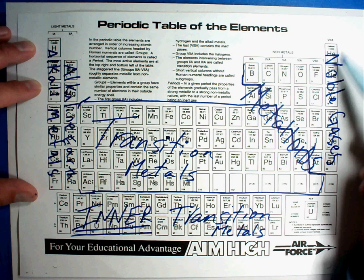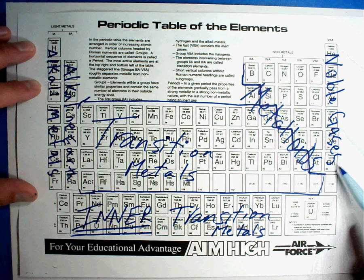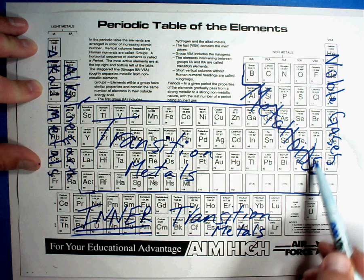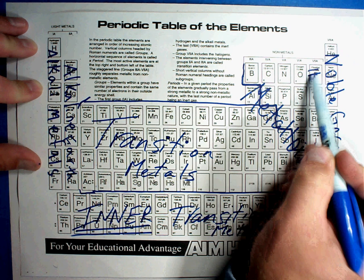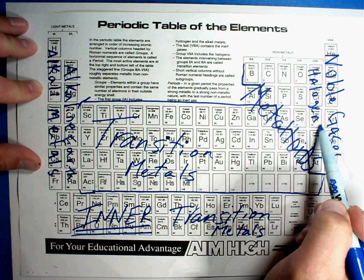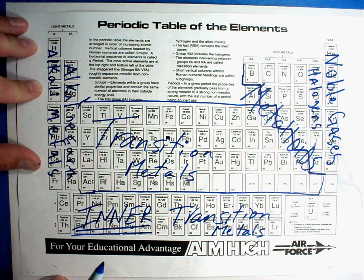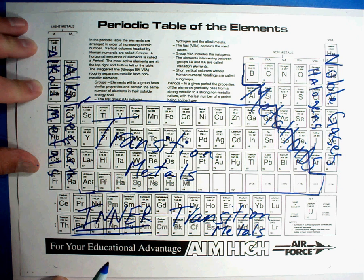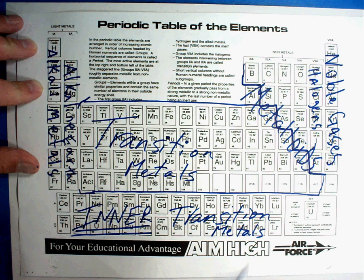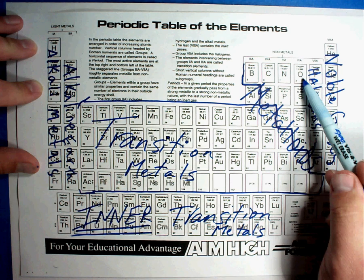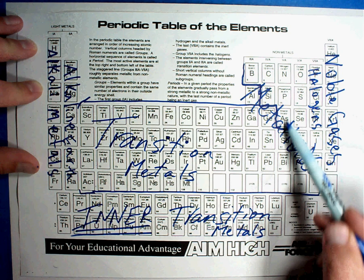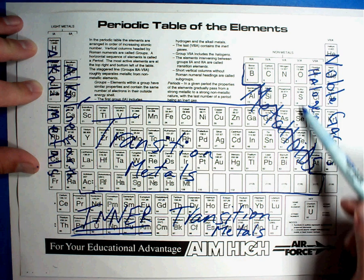Right inside that column, fluorine through astatine, At, are called the halogens, H-A-L-O-G-E-N-S, halogens. And after that, there's not a whole lot of other labeling. Sometimes you'll hear it called the oxygen group. This one doesn't have a special name. The nitrogen group, it doesn't have a special name. Now let me say this. Oxygen group goes all the way down to the staircase. Nitrogen group goes down toward the staircase. And then the carbon group.